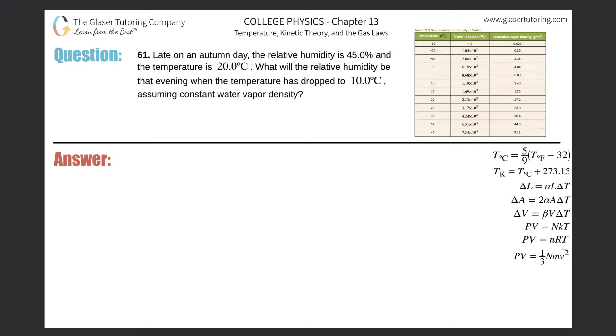Number 61. Late on an autumn day, the relative humidity is 45% and the temperature is 20 degrees Celsius. What will the relative humidity be that evening when the temperature has dropped to 10 degrees Celsius, assuming constant water vapor density?